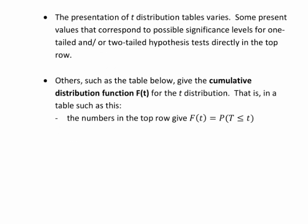But you should be aware that the presentation of inverse T distribution tables varies quite a lot. So the one we're going to show you here is just one example. Some such tables present values that correspond to possible significance levels for one-tailed or two-tailed hypothesis tests in the top row. Whereas others, such as the table we're about to look at, give us the cumulative distribution function F of T for the T distribution.